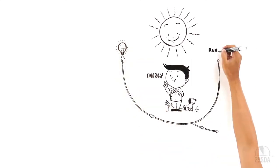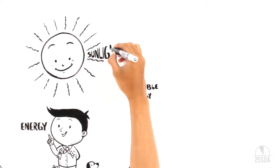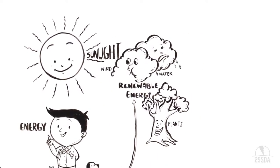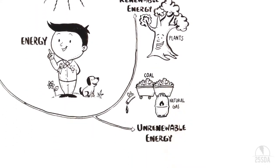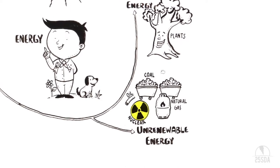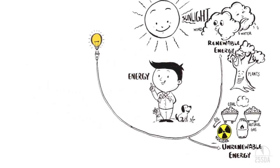There are two kinds of energies: renewable energy and non-renewable energy. Sunshine, wind, water, plants - the flow of energy from these never stops. Oil, coal, natural gas, atomic energy - there's a limit to these energies. These energies can be all used up.